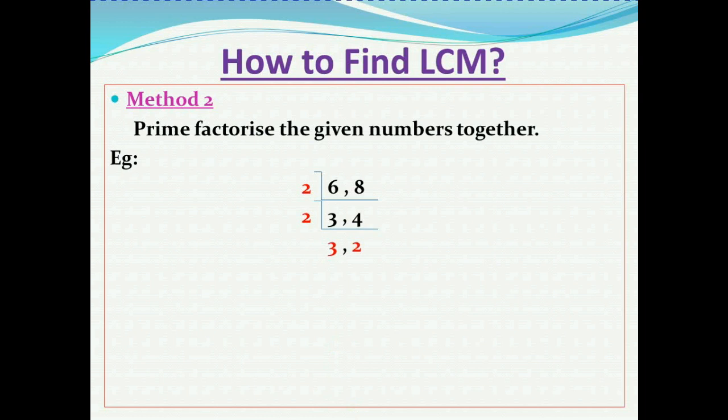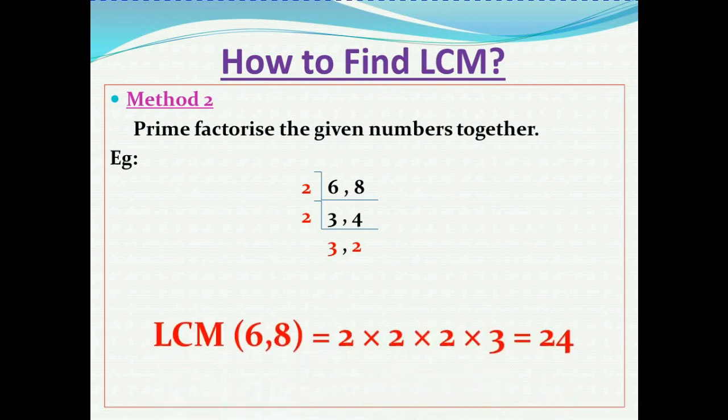3 cannot be divided by 2, so we bring 3 down, and 4 divided by 2 gives 2. The prime numbers we received are two 2s and one 3. So the LCM of 6 and 8 is the product of three 2s and one 3: 2 × 2 × 2 × 3 = 24.